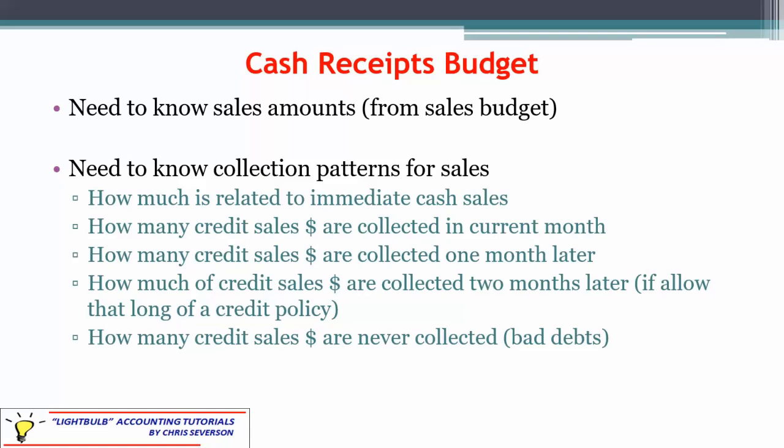We need to figure out what those collection patterns are — how much is collected in the current month. First, how much is related to immediate cash sales? In some cases, not all payments are on account; some may be cash immediately, so those are collected that first month. Then, out of the credit sales, some may be collected in the current month even though they were credit — a few weeks later, but still in the current month. Then you need to know how many credit sales are collected one month later. Usually these will be given to you in percentages because it's a pattern, a history — what did we collect last year, and we'll apply that this year.